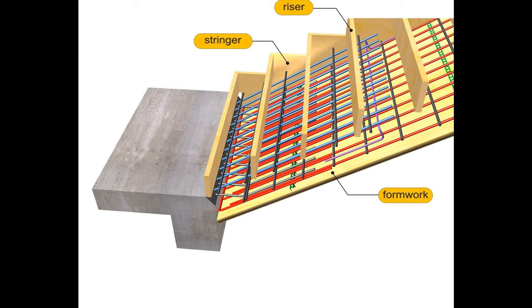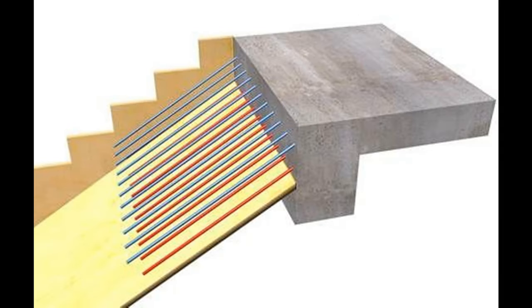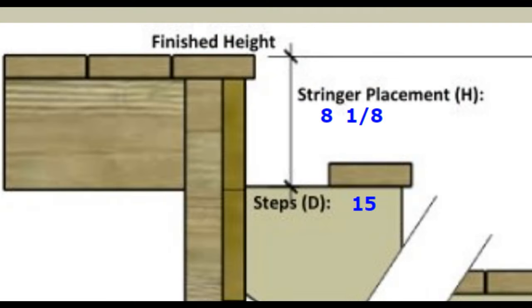You don't even need any calculations for it even though you can calculate it. You can measure downwards from the top of your landing and in our case we would measure 8 and 1 eighth inches down from the top of our landing and that would give us your stringer placement.